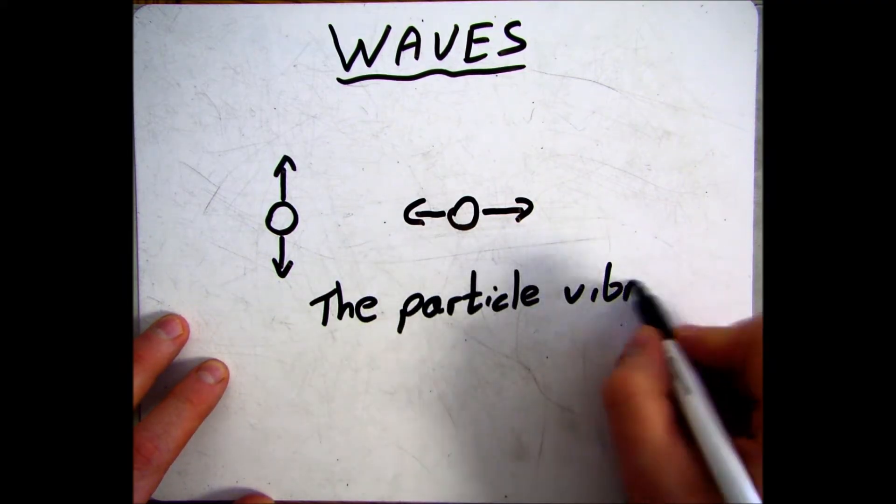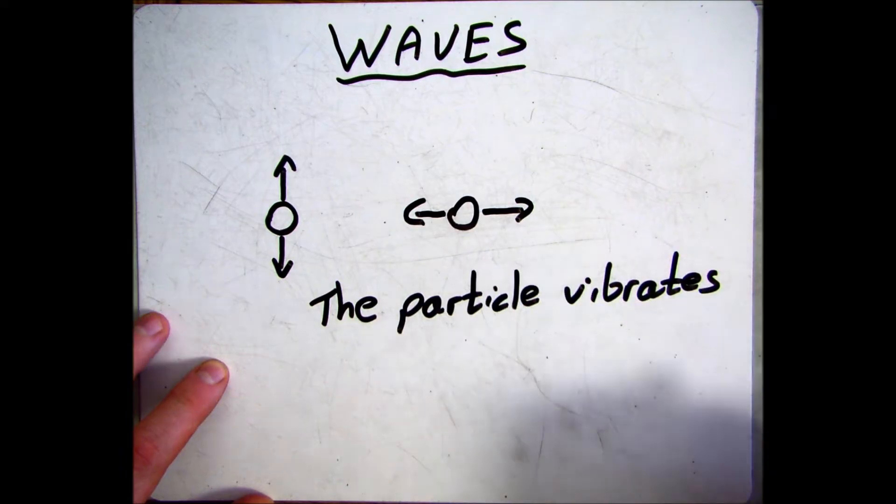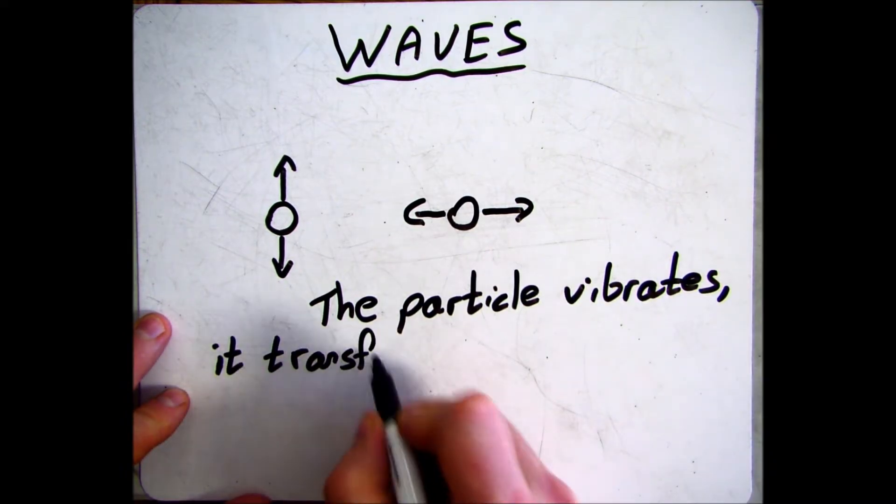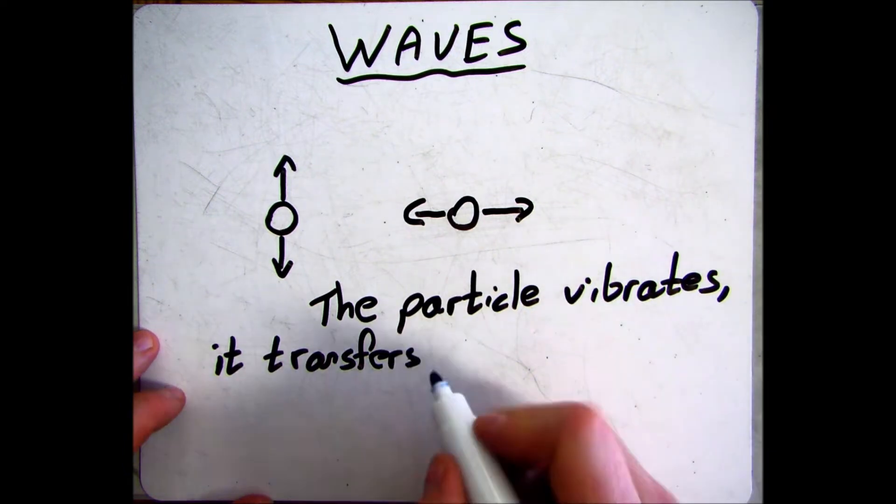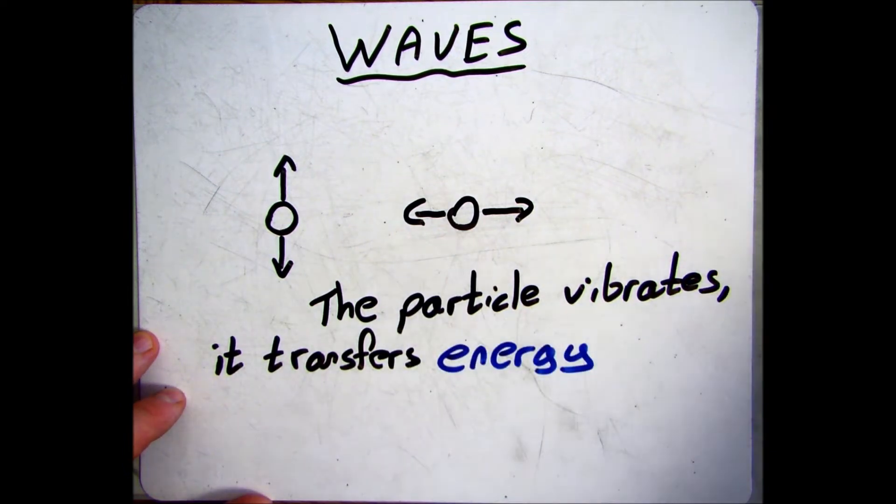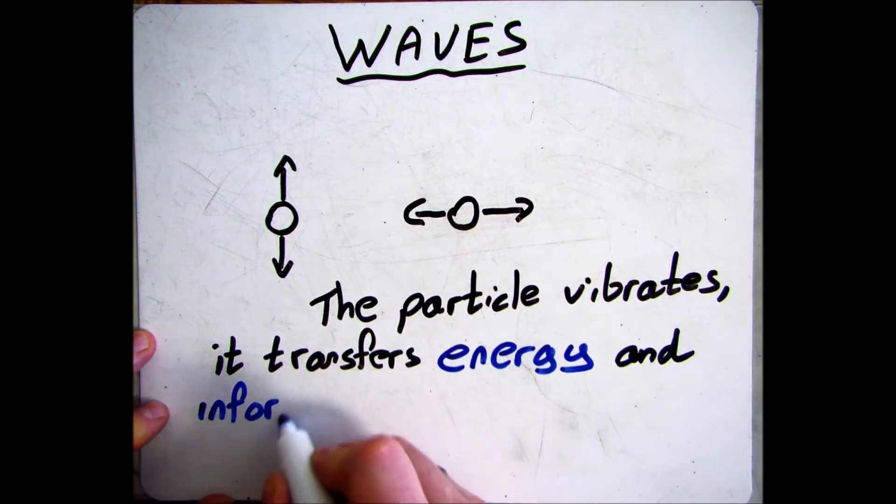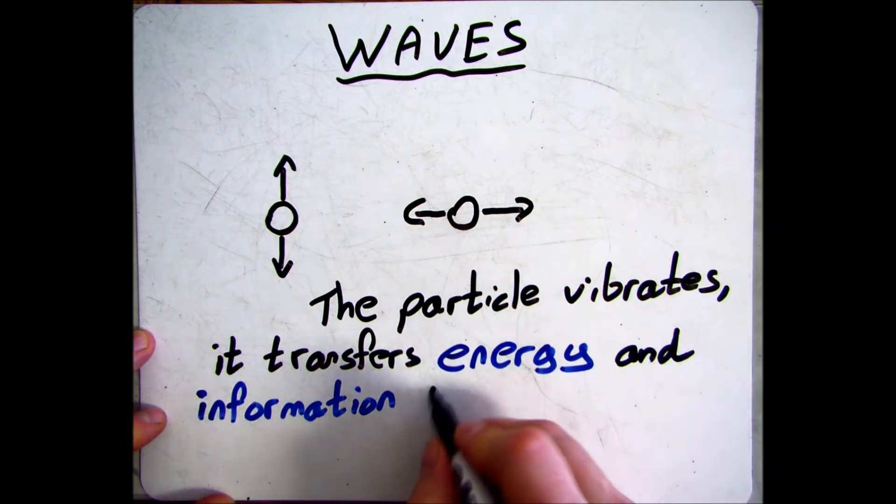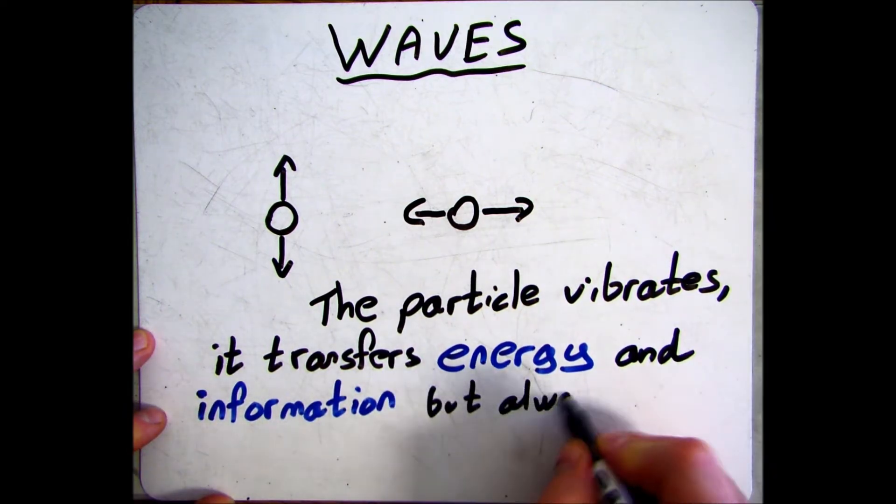These in turn pass energy to the particles next to them. In this way energy and information is transferred by the wave, but each time the particle ends up back where it started from. So the particles don't move - the material that the wave's passing through doesn't move from where the wave started to where the wave ends up.